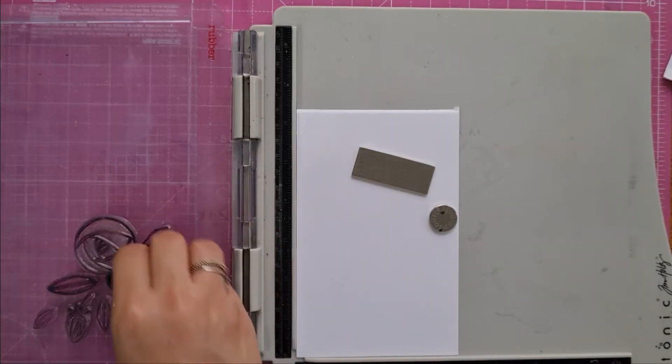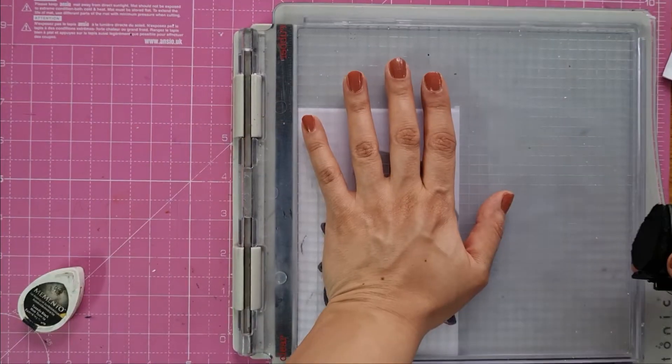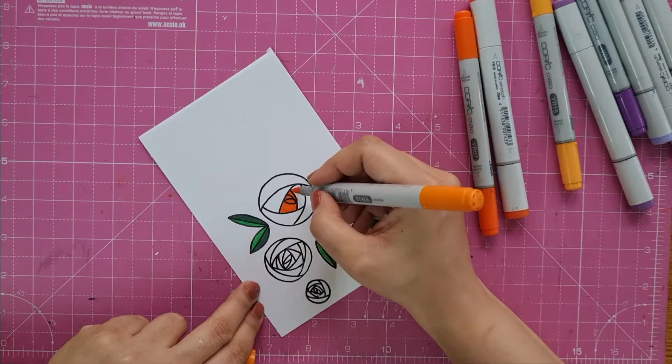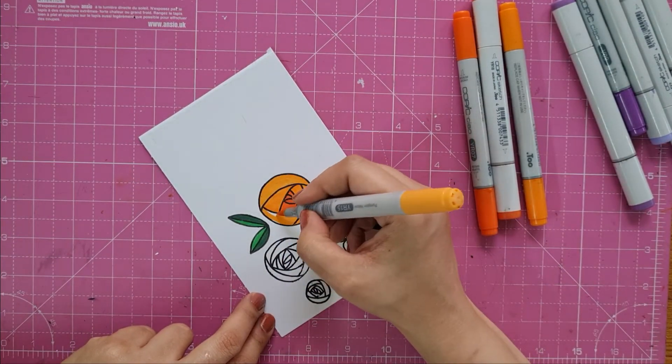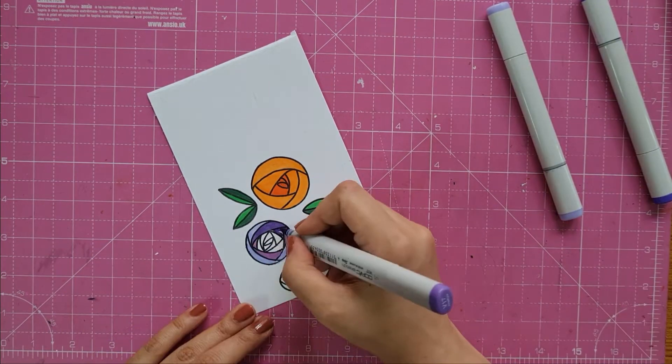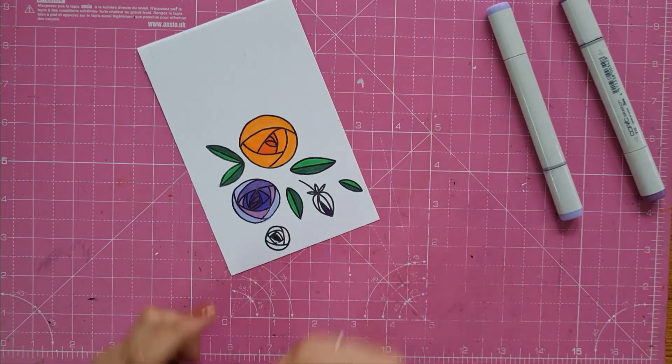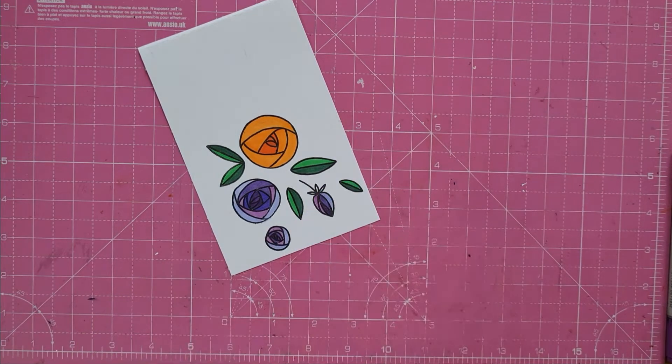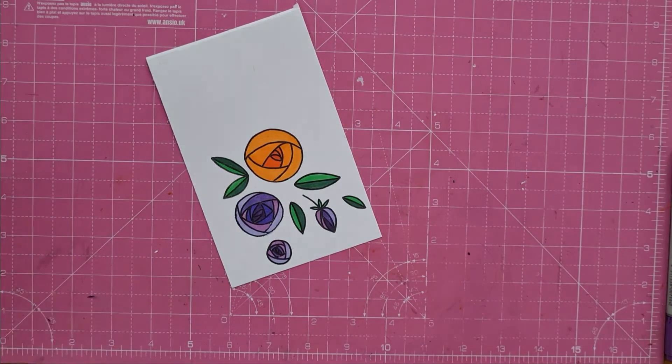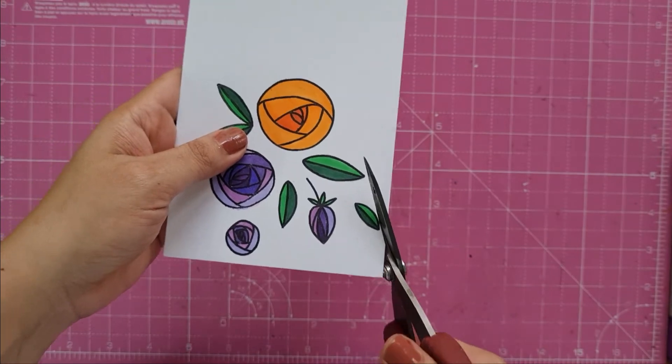I'm going to stamp my flowers and leaves on Neenah Solar White, and I'm going to color them with my alcohol markers. Like I said earlier, I don't have time, I'm rushing, so I just take some greens and various oranges and violets and just do basic coloring. I'm just taking one segment, putting a color there, the darker color inside and lighter outside. Because these flowers have such beautiful segments, it's very easy to color and not a lot of scope for mistakes. After coloring, I fussy cut my flowers.